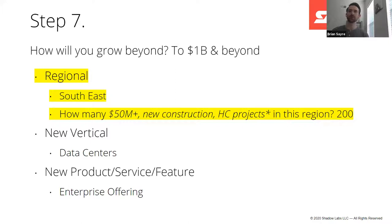The next step is to show us how you're going to grow to a billion dollars and beyond. You have three options: one, expand through different regions — start in the Northeast, expand to the Southeast. Two, go after new verticals — if you're in healthcare, look at entering data centers, still focused in the Northeast but expanding what type of project you're selling. Three, add new products, services, and features — for example, adding an enterprise offering.